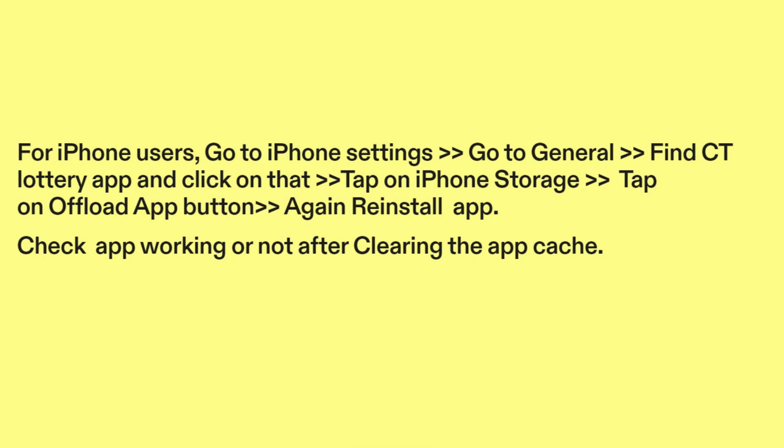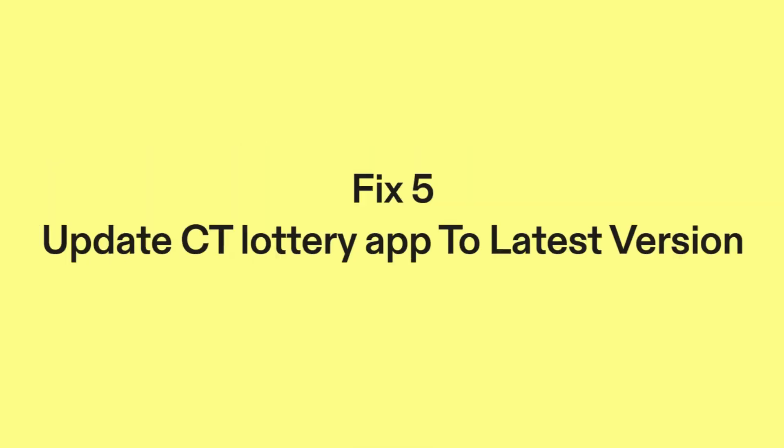For iPhone users, go to iPhone Settings, then go to General, find the CT Lottery app and tap on iPhone Storage. Tap on the Offload App button, then reinstall the app. Check if the app is working after clearing the app cache.